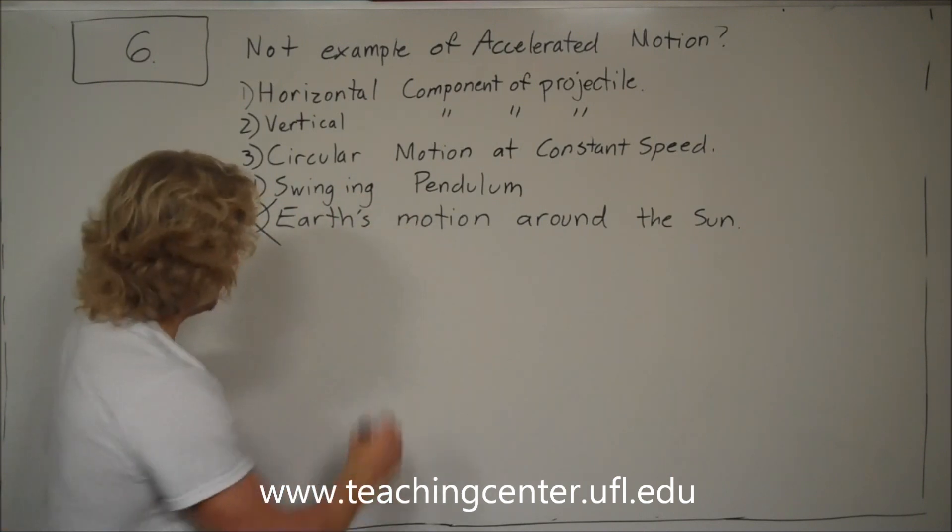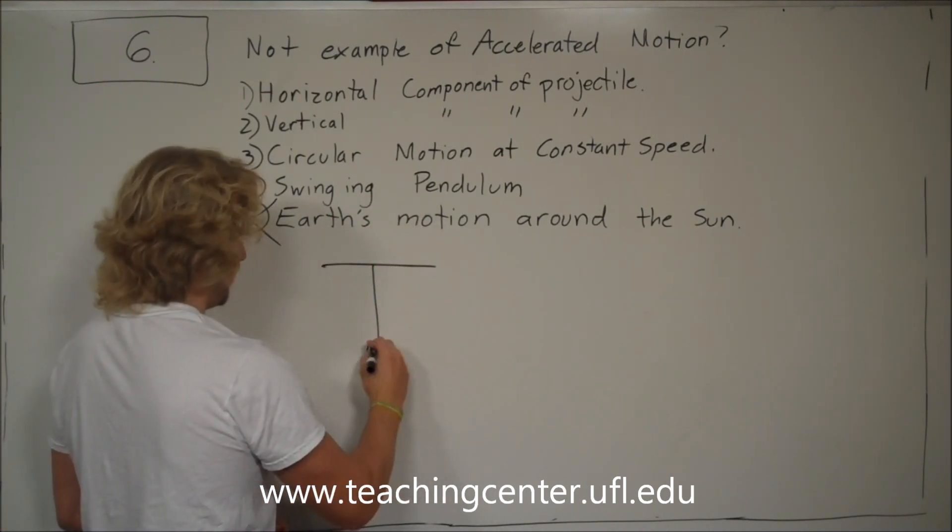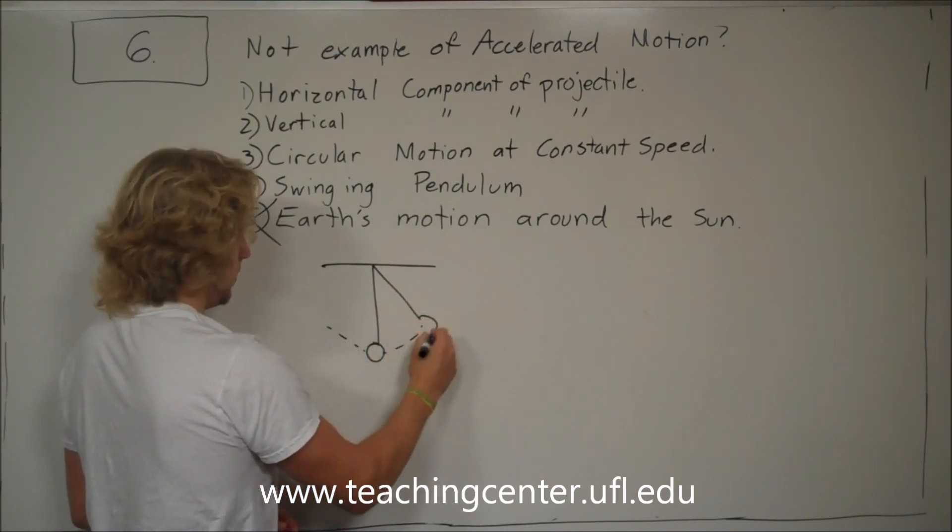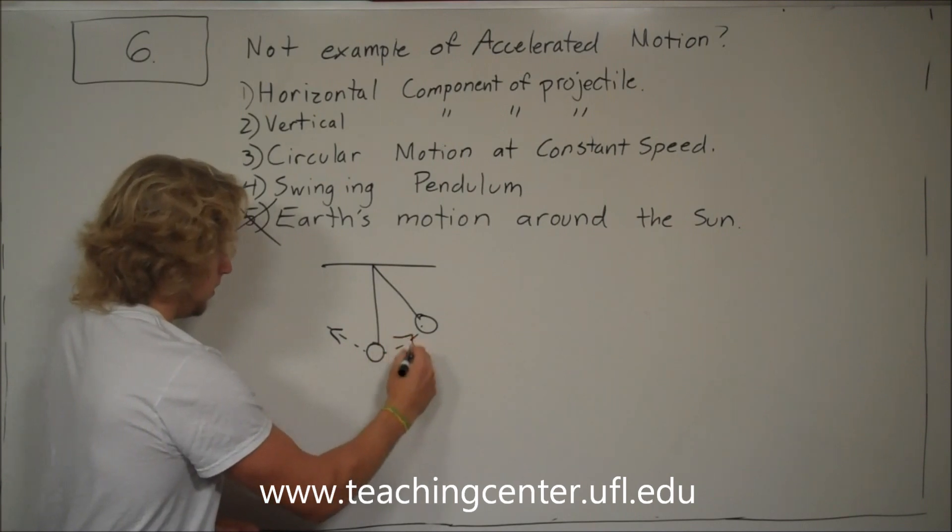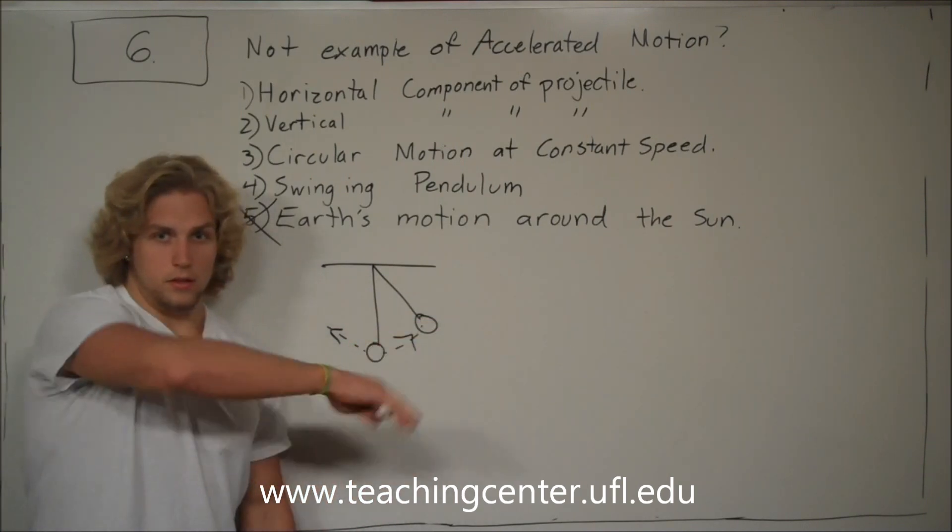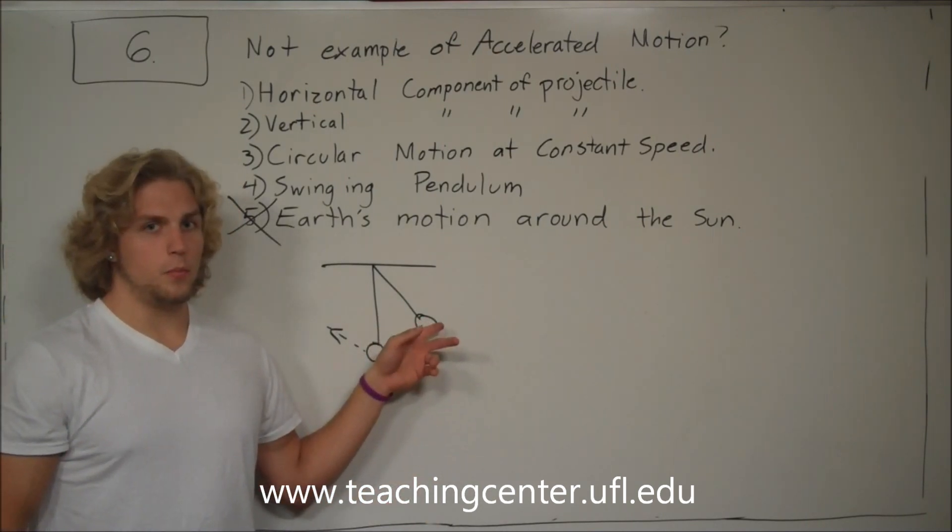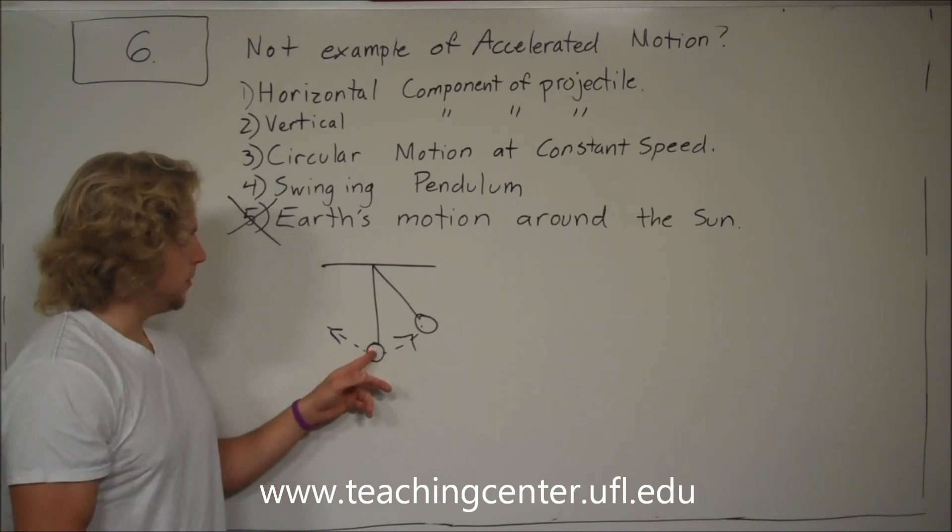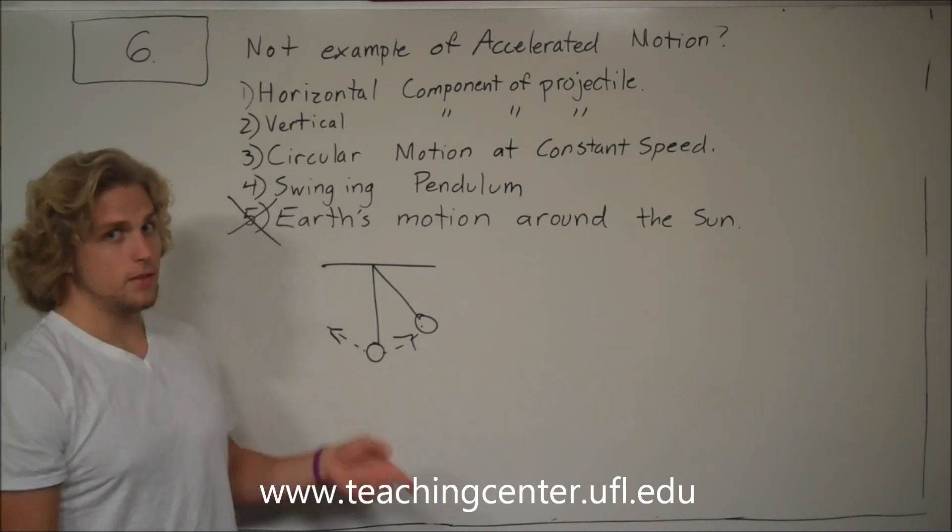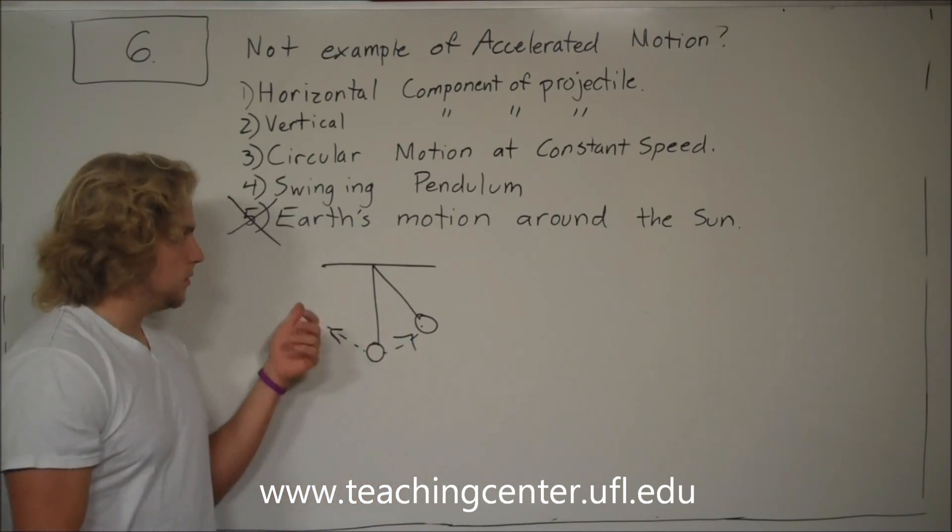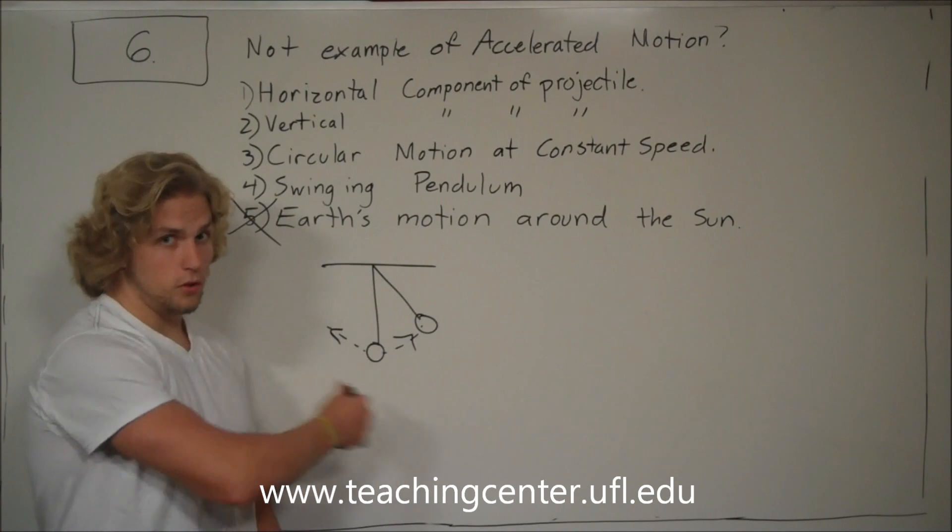Swinging pendulum - you have a pendulum that goes back and forth. When it's at the top, it's stopped momentarily. When it's at the bottom, it's going its fastest. When it's at the top again, it's stopped momentarily. That means there are varying speeds. Also, it's changing direction, going in a somewhat circular motion, at least the bottom part of the circle.